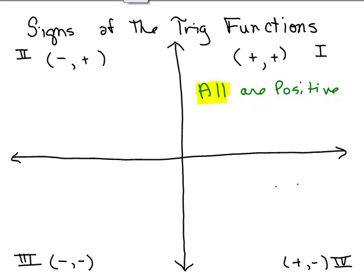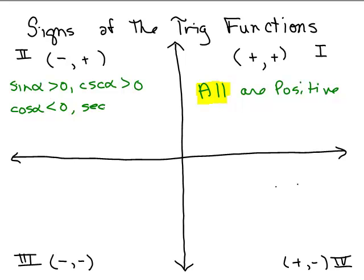Let's think about what's going on in quadrant 2. The sine is the Y value over R, so it's a positive number over a positive number, which means it's positive. So the sine of an angle in quadrant 2 is positive, and its reciprocal will also be positive. The cosine is X over R, so it'll be a negative number over R — negative over positive is negative. Its reciprocal will also be negative. The tangent is Y over X, so I have a positive over a negative, which is negative. Its reciprocal is also negative. So in quadrant 2, the sine and cosecant are positive.